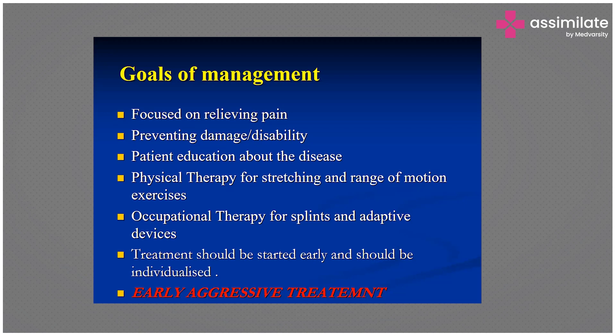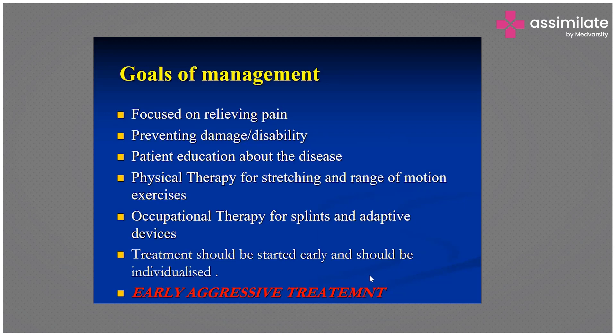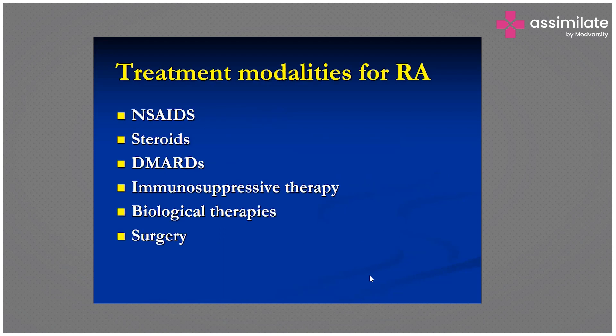Always remember: early aggressive treatment. Treatment modalities include NSAIDs, steroids, DMARDs — disease-modifying anti-rheumatic drugs — immunosuppressive therapy, biological therapies, and surgery. Surgery comes last.